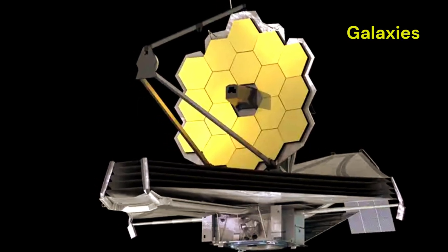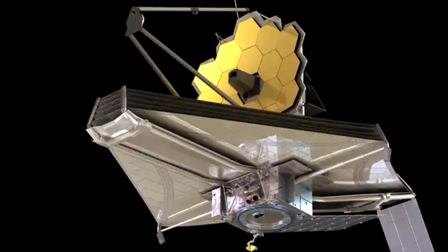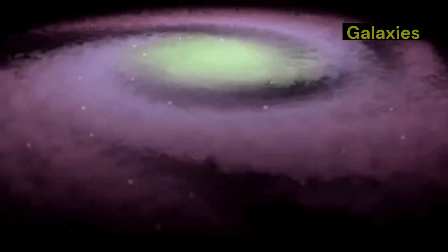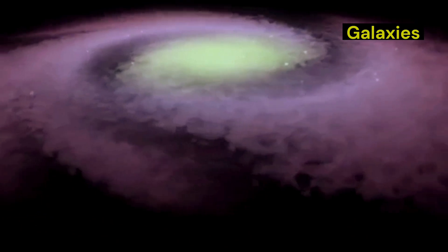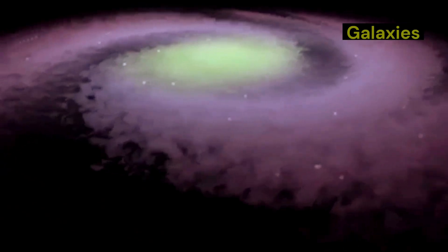With its remarkable sensitivity and advanced technology, JWST is poised to revolutionize our understanding of the cosmos and our place within it. The telescope is equipped with a giant gold-coated mirror and infrared instruments, allowing it to detect faint light from the most distant objects in the universe. These objects are so far away that their light has been stretched by the expansion of the universe, shifting it into the infrared part of the spectrum. JWST is specifically designed to capture this light, providing us with unprecedented views of the early universe.